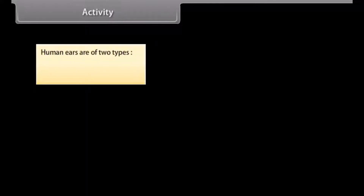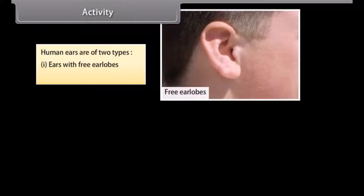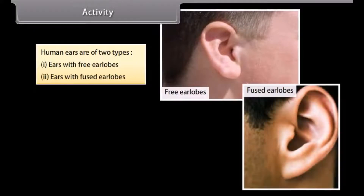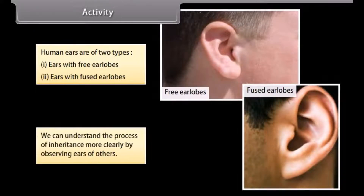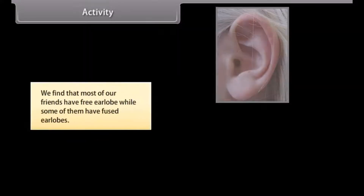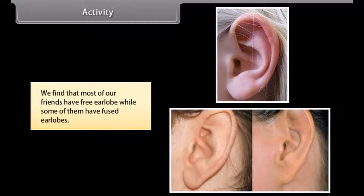Activity: Human ears are of two types — ears with free ear lobes and ears with fused ear lobes. We can understand the process of inheritance more clearly by observing the ears of all the students in the classroom. We find that most of our friends have free ear lobes while some of them have fused ear lobes.